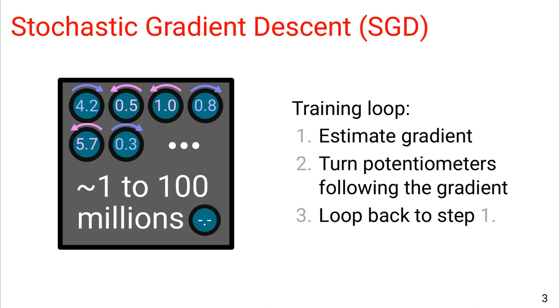Precisely, the stochastic gradient provides a noisy estimation of the direction that would locally improve the most the answer of the model on the training data. The iterative training algorithm is the following: one, estimate the gradient; two, turn a bit the parameters following it; three, loop back to step one.